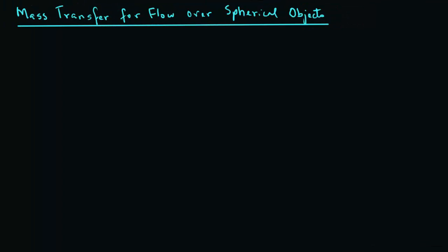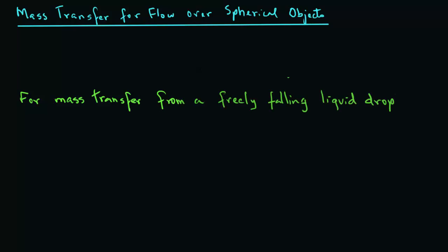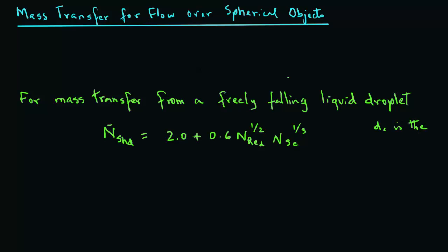In many cases we are interested in mass transfer when there is flow over a spherical object. For mass transfer from a freely falling liquid droplet, the Sherwood number equals 2.0 plus 0.6 times Reynolds number raised to power 1/2, times Schmidt number raised to power 1/3. Note that the characteristic dimension D_C is the diameter of the spherical object.